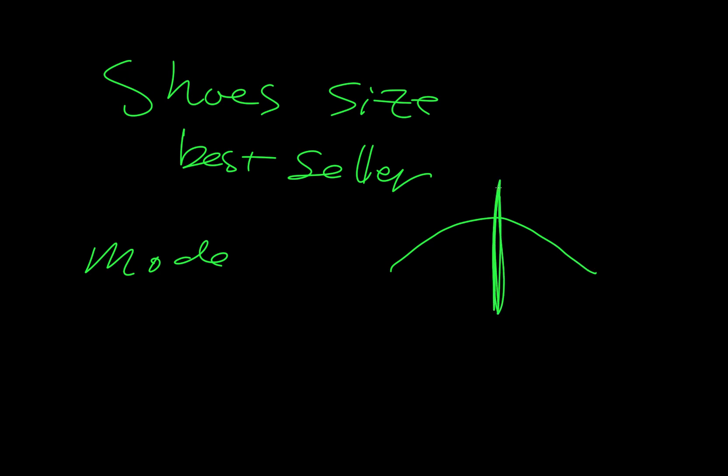So in this case, when we're saying shoe size and we want to know the best seller, mode will tell us this at a glance. If we want to know kind of like a range of values but just like one value that can kind of tell us where the middle is, that's where we're going to find median. And so if we say size 5, then we know there's some on this side, half of them are on this side and half are on this side.